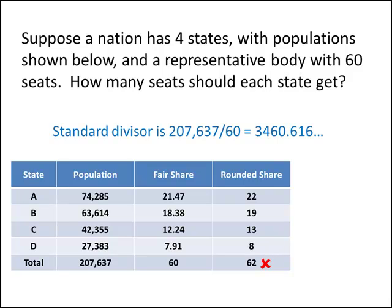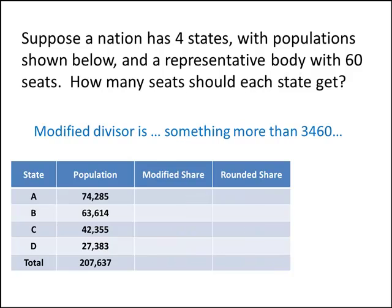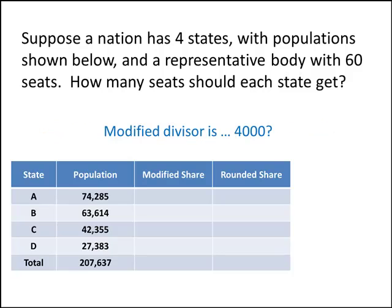We'll be making this modified divisor larger. The reason for that is that if we take these populations and divide them by a larger number, that will give us smaller answers. We're looking to find a larger number such that when we take those populations, divide them by that larger divisor, and round the answers up — with Adams' method we always round up — we end up with the 60 seats we're looking for. So the modified divisor should be something more than 3460. Let's try 4000.